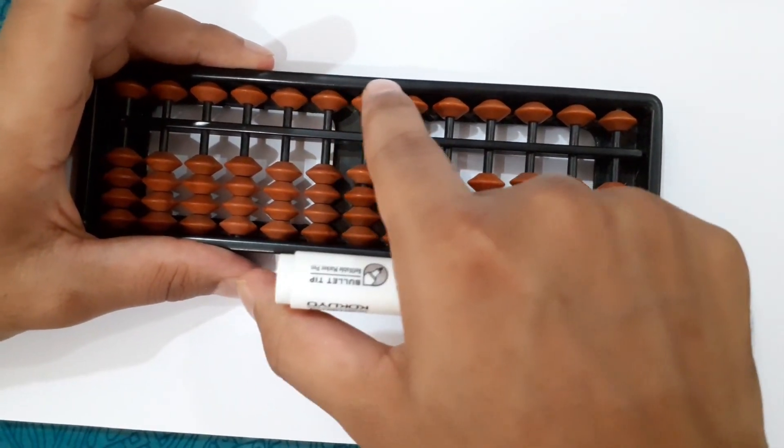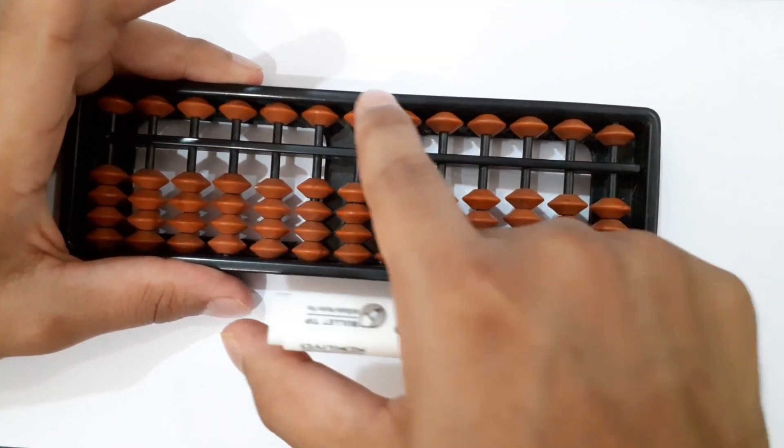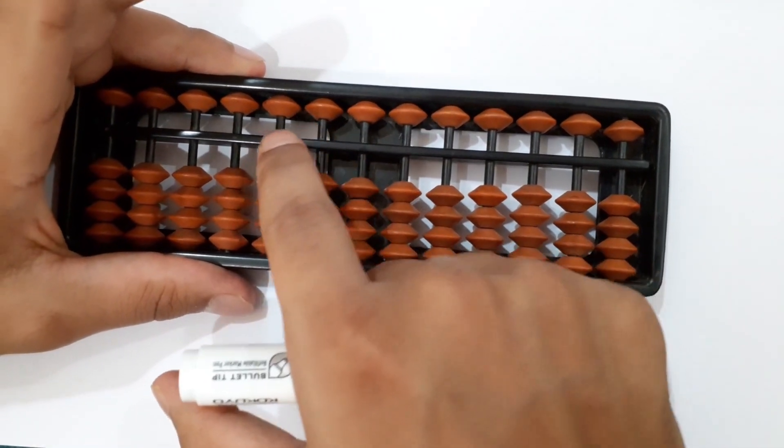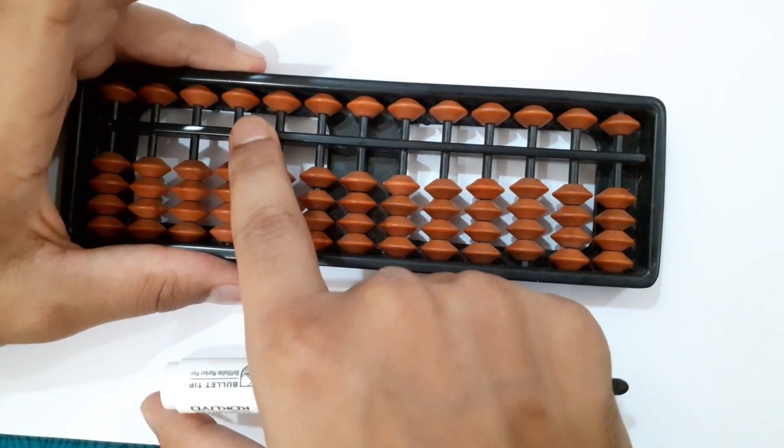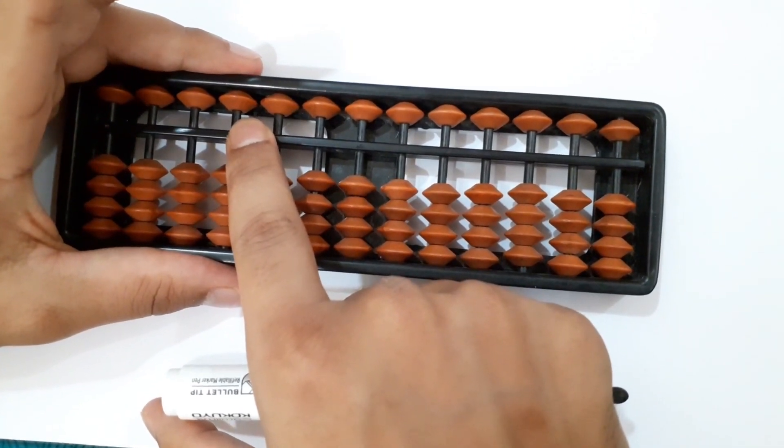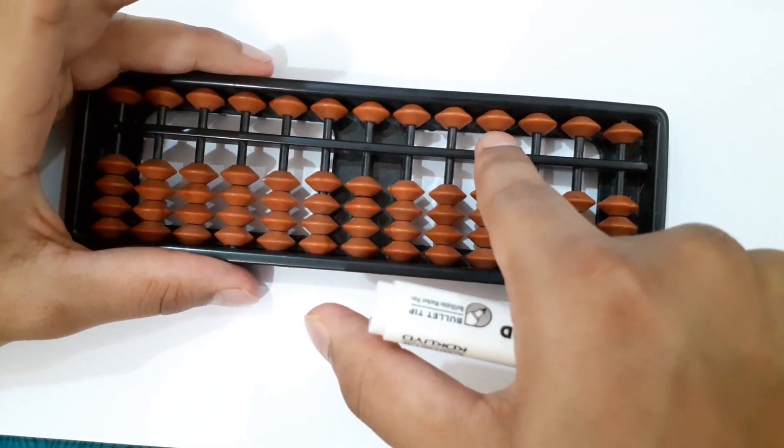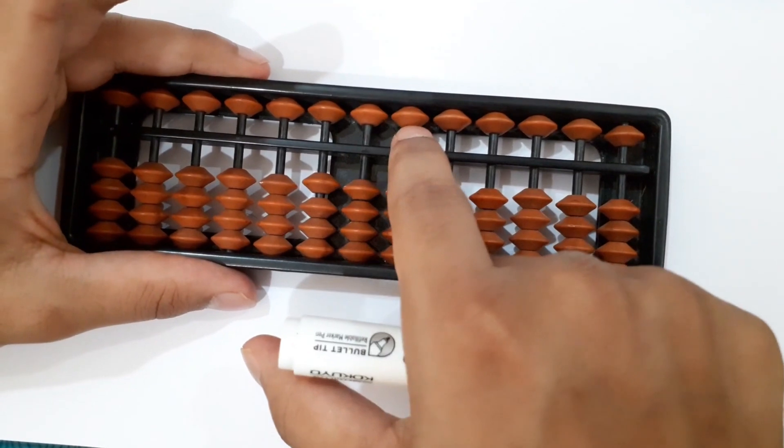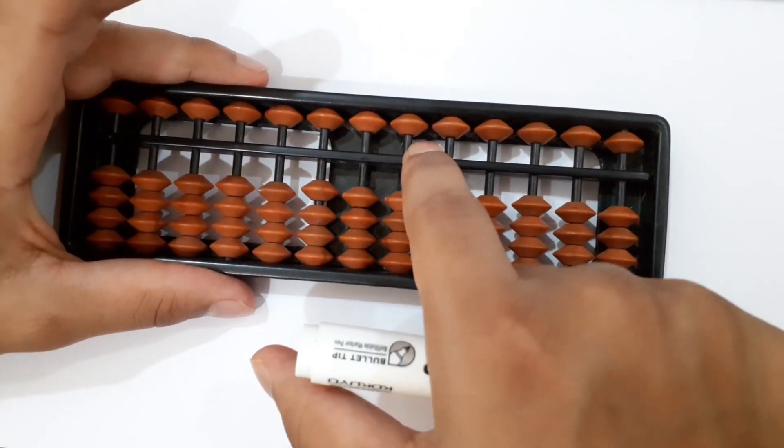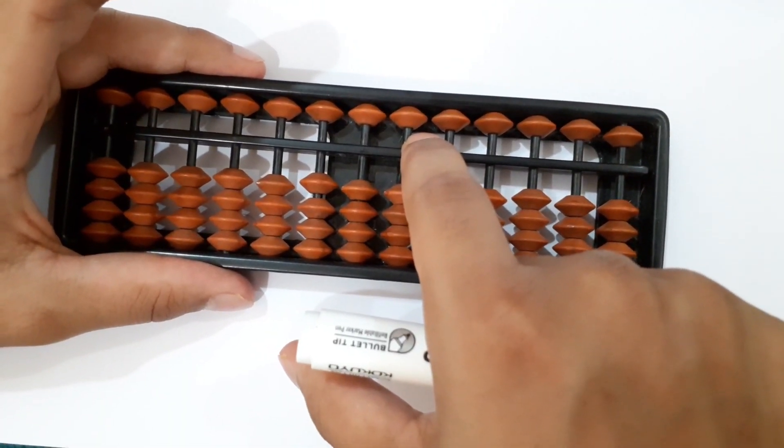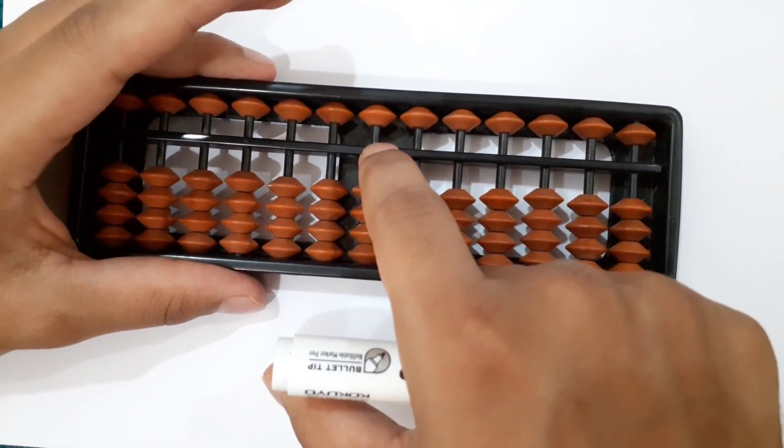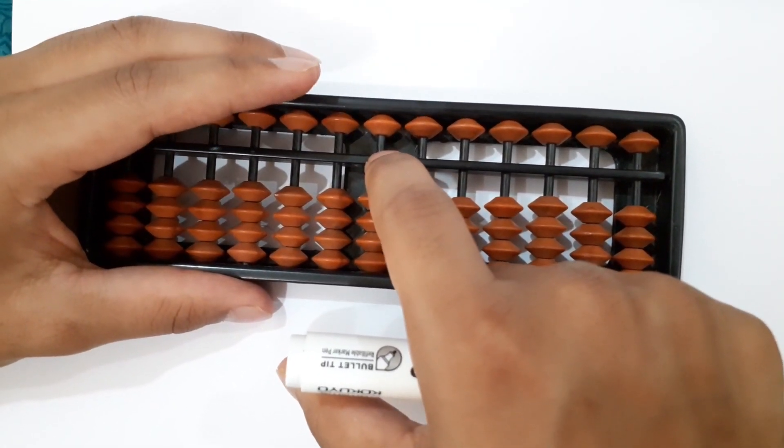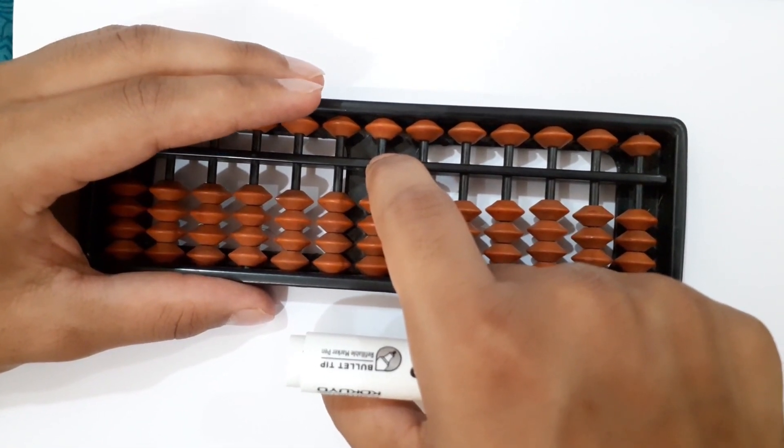The same divider, upper rods, lower rods, units rod, tens rod, hundreds rod, thousands rod apply the same for the smaller Abacus also. In case you have an Abacus which is bigger than this 13-rod Abacus, it's not going to change anything. All the values will be the same. We are going to see how to place numbers on the Abacus in our next videos.